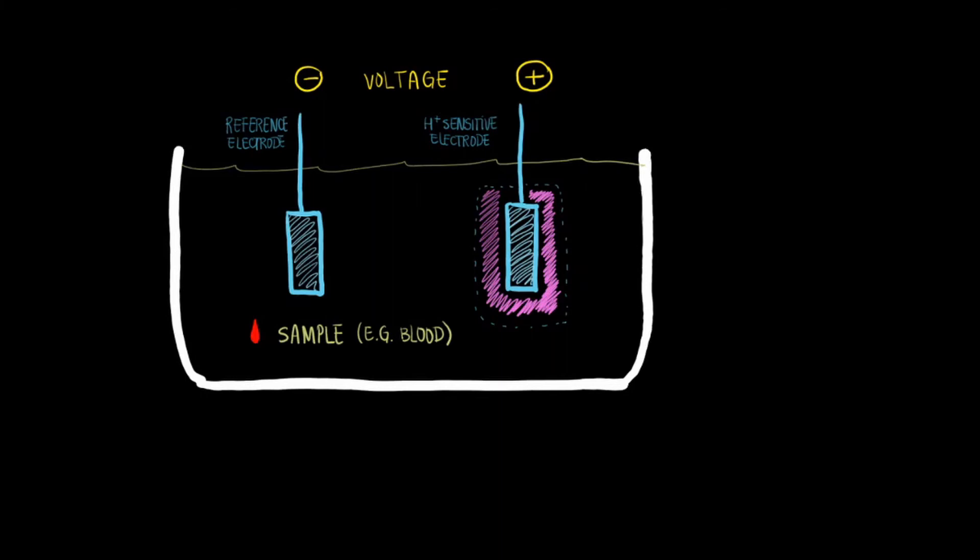Now, onto the special compartment in pink. Notice a dotted line around the drawing of the hydrogen ion sensitive electrode. This is a semi-permeable glass membrane. Only hydrogen ions can cross this special semi-permeable membrane.